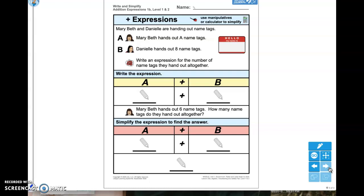Mary Beth and Danielle are now handing out name tags at their safety fair. So Mary Beth hands out A name tags. Do we have a number yet? No. So we're going to put A down here because we don't know it. We have no idea what that first number is yet. B, Danielle hands out eight name tags. So now this time we know what B is. B is now eight.